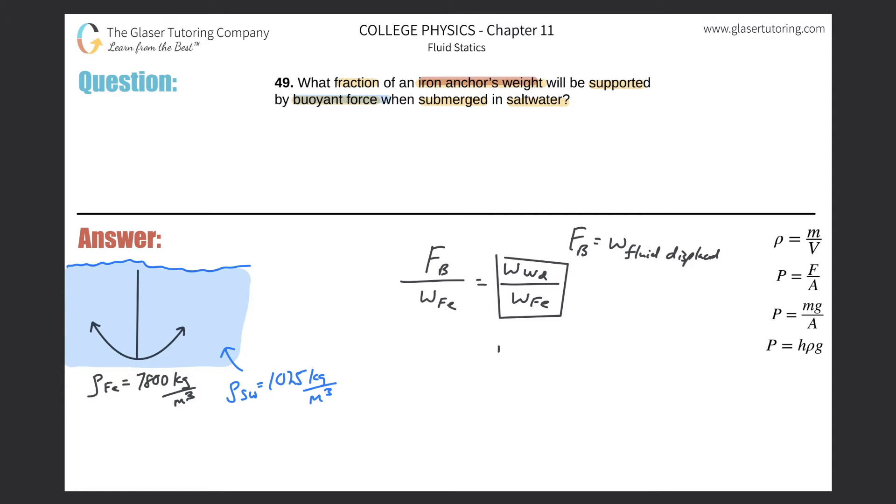Let's expand on the weights. You know what weights are - it's just mass times gravity. So this is the mass of the water that's displaced times gravity divided by the mass of the iron times gravity. Gravity cancels out. Now we don't know either mass, but we do know the density.